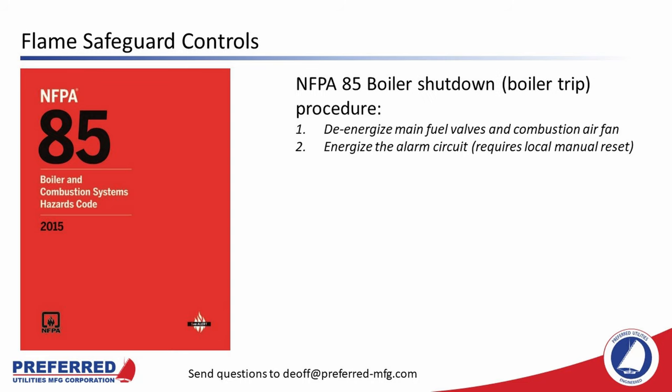On a boiler trip, there is a different procedure. A boiler trip occurs in more serious situations — like a flame-out or a gas pressure switch being tripped. The flame safeguard controller will de-energize the main fuel valves and the combustion air fan and energize the alarm circuit. This requires a local manual reset: an operator must go out to the boiler and make sure it is safe to light off again before hitting the reset button. Otherwise the burner stays shut down in alarm.